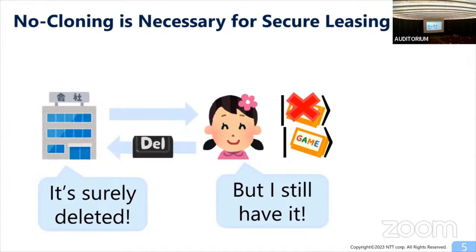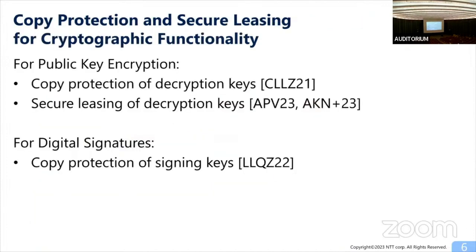Both copy protection and secure leasing are functionalities for which the no-cloning theorem is essential. Classical information is not useful for achieving them — quantum information is necessary. In recent years, there have been several works considering copy protection and secure leasing for cryptographic functionality, and we focus especially on public encryption and digital signatures, which are among the most important cryptographic primitives.